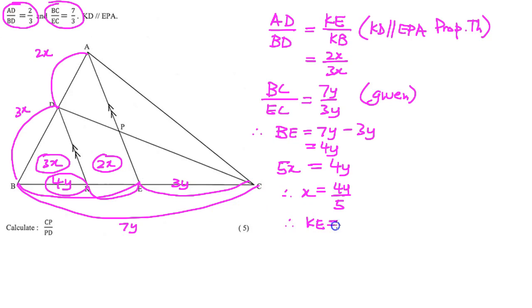Now we are ready to write our final answer. Let's say KE is equal to 2x. Therefore, KE is equal to 2 times 4y over 5, which is going to equal 8y over 5.